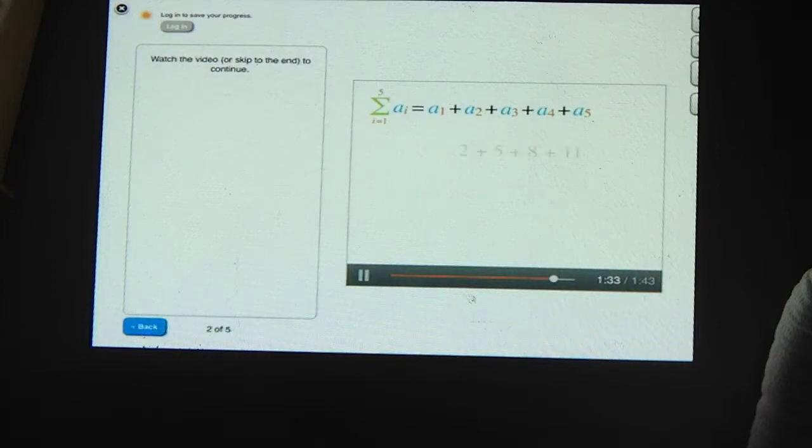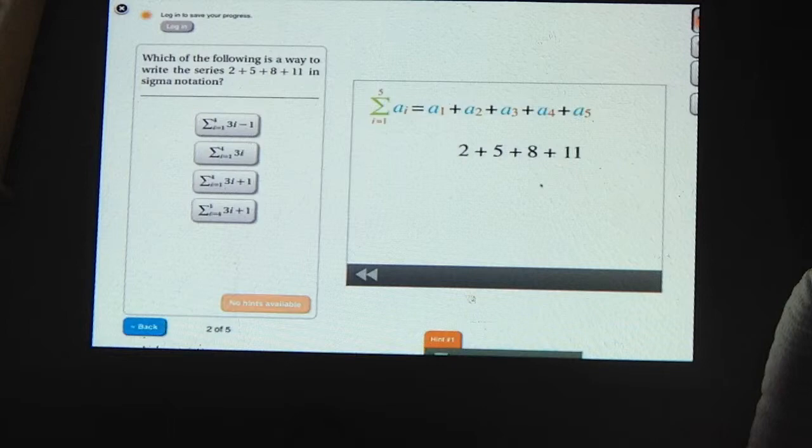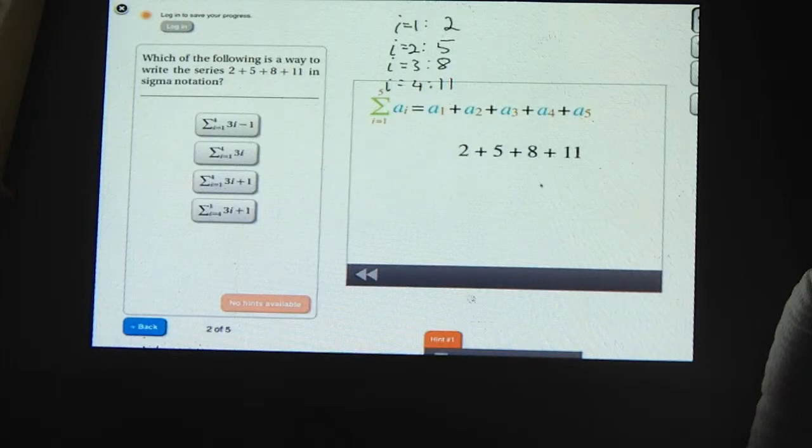Now it's your turn. Here's a series. 2 plus 5 plus 8 plus 11. Which of the following is a way to write this series in sigma notation? We want the first term, or the i equals 1 term in the series, to be 2. The i equals 2 term should be 5. The i equals 3 term should be 8. And the i equals 4 term should be 11. Which of these formulas works?